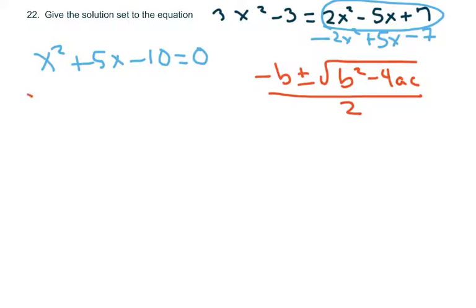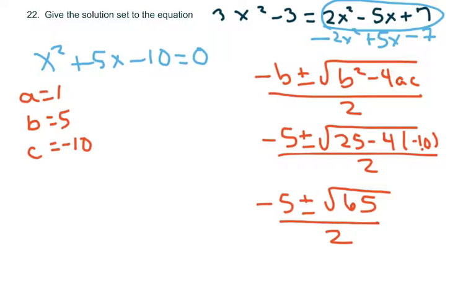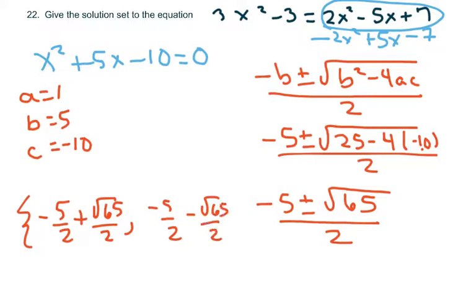So since I can't factor this, I'm going to use the quadratic formula. It doesn't look too difficult. So I'm going to write down my ABCs. So basically we get negative 5 plus or minus square root of 25 minus 4 times 1 times negative 10, over 2 times 1, which is just 2. So we get negative 5 plus or minus square root of 65 over 2. And the way they write it is negative 5 over 2 plus square root of 65 over 2, and negative 5 over 2 minus square root of 65 over 2. So pretty easy. Make sure you know how to do the quadratic formula.